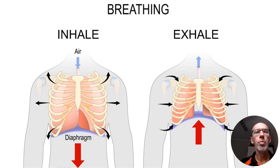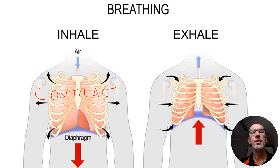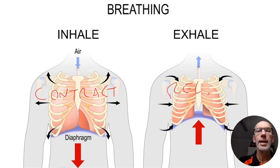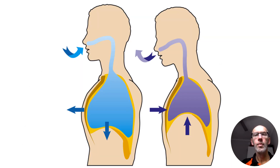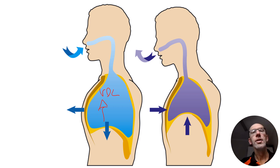When we breathe in, our intercostal muscles and diaphragm both contract. When we exhale, our diaphragm and intercostal muscles relax. Consequently, when we breathe in the volume of our lungs is increasing, and when we breathe out the volume of our lungs is decreasing.